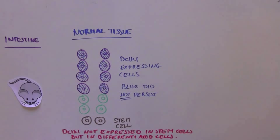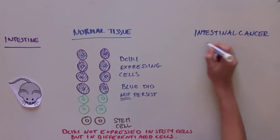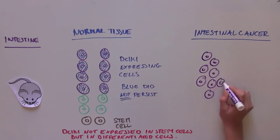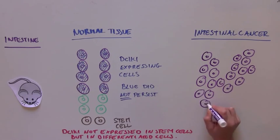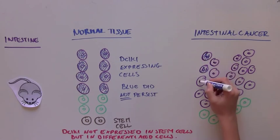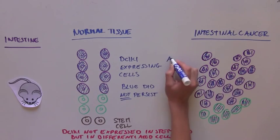Next, the scientists wondered what kinds of cells contain DCLK1 protein in intestinal cancer. So they performed the same experiment, looking at cells that contain DCLK1 in a mouse that spontaneously develops intestinal cancer. In those tissues over time, more and more of the tumors turned blue, until all of the tumors were blue.